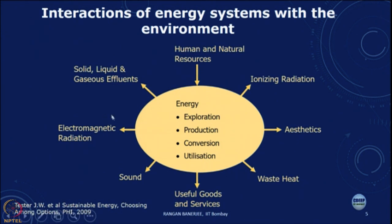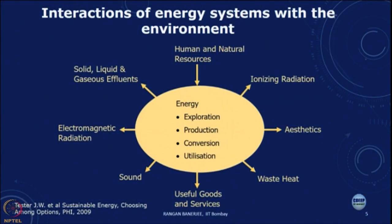This figure is from the book by Tester on sustainable energy. When we look at an energy system — exploration, production, conversion, or utilization — we are using natural and human resources, and in the process we generate useful effects such as cooling, heating, or transport. There are useful goods and services, but in producing them there are unintended impacts we cannot avoid. These include solid, liquid, and gaseous effluents or pollutants which go into the atmosphere, air, land, and water, and each of these, depending on concentration and how they are released, will have different kinds of impacts on humans or the ecosystem.